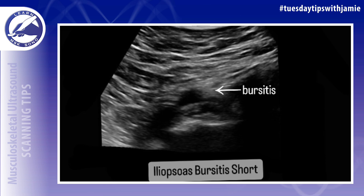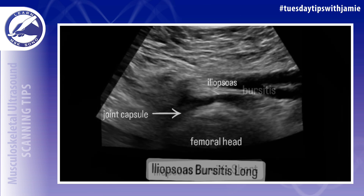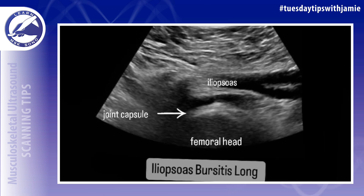By separating the tendon from the bone, the bursa reduces friction between the anterior hip capsule and the iliopsoas, allowing for the tendon to glide freely over the bony surface.